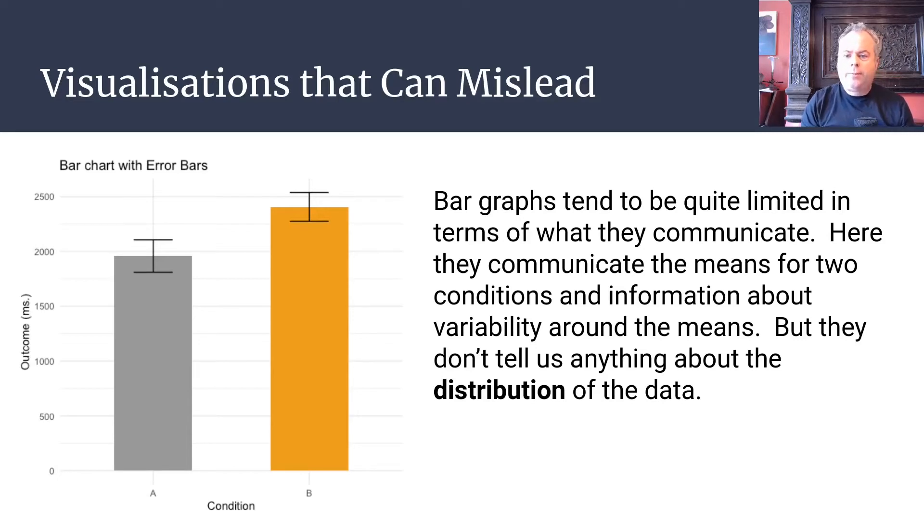They're relatively limited in terms of what they communicate. Here is a bar chart where we've got two experimental conditions labeled as A and B. We've got some outcome measure measured in milliseconds. For condition A the average is maybe about 1950 with standard error bars as a measure of variability, and for condition B we see the average is about 2400 with variability. At first glance you might think this looks fairly reasonable—we've got information about central tendency in our data and variability. But what's really important is that bar graphs don't tell us anything about the underlying distribution of the data, so they don't allow us to see the raw data themselves.